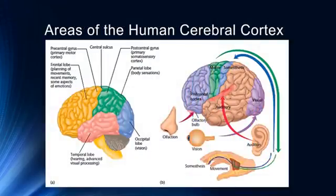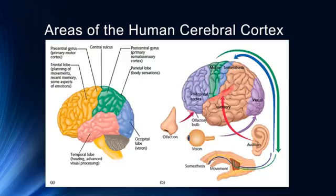In terms of the functional areas of the cerebral cortex, it is divided into four lobes: the frontal lobe, the temporal lobe, the parietal lobe, and the occipital lobe. The frontal lobe, shown in yellow in the figure, is involved in planning of movements, recent memory, some aspects of emotional processing, planning and coordination for future activities, working memory, and attention.